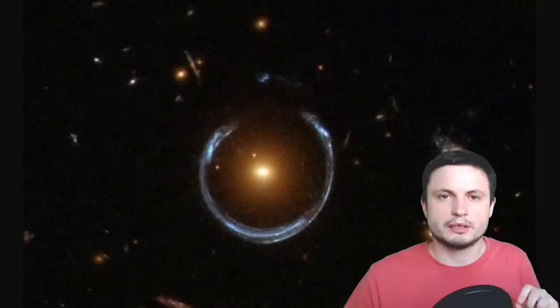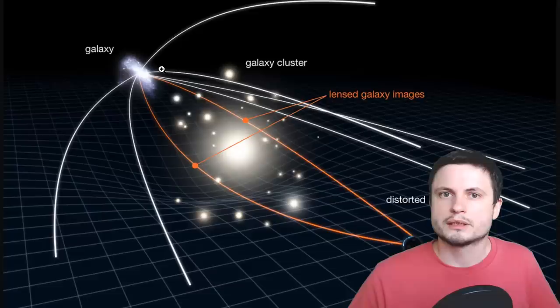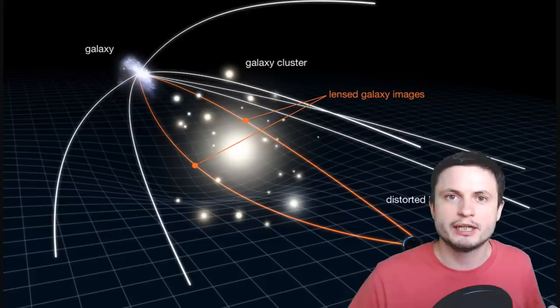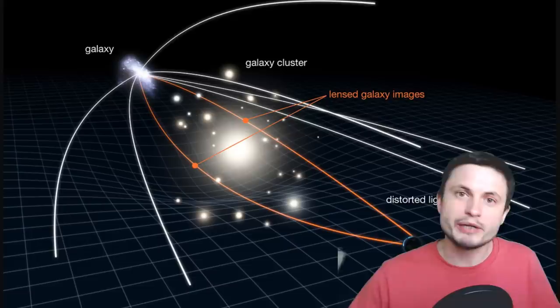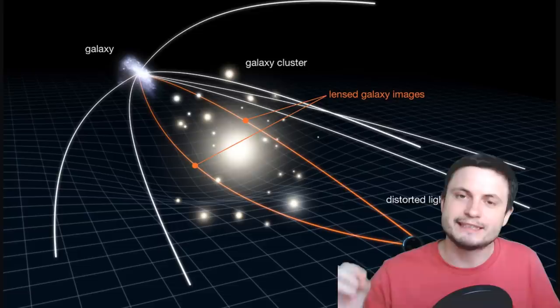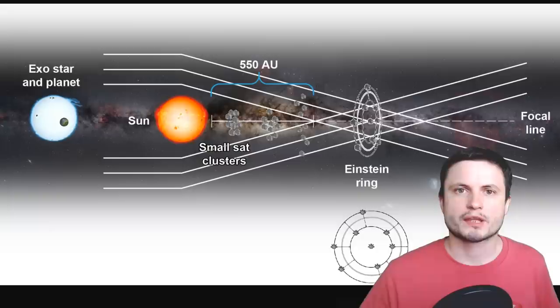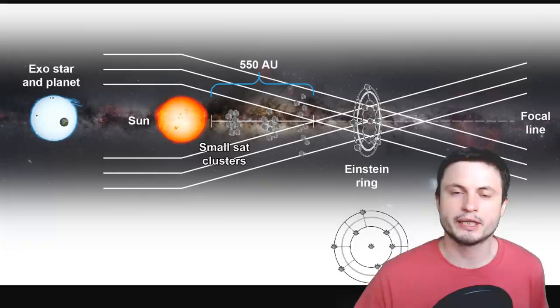So this right here is known as the Einstein's ring. This is the ring of light that's formed when an object in front of something we're looking at creates a kind of a gravitational lens. Basically, it bends the light rays in such a way that they form a ring when we're looking at the object, while at the same time magnifying things quite dramatically. This is actually how we were able to discover an actual planet extremely far away, like billions of light years away from us, by accidentally seeing the planet pass in front of an object that was gravitationally lensed.